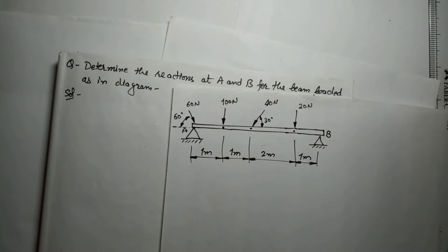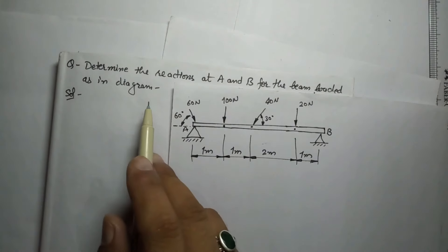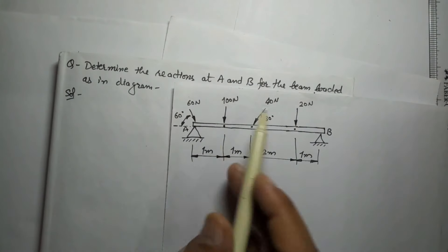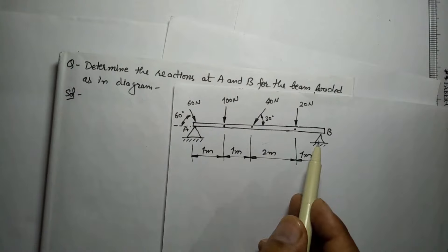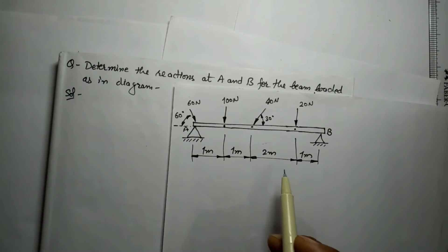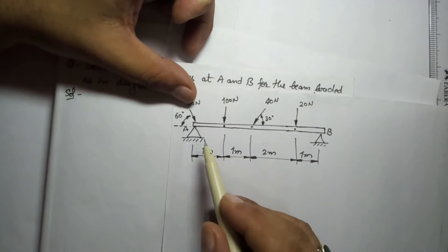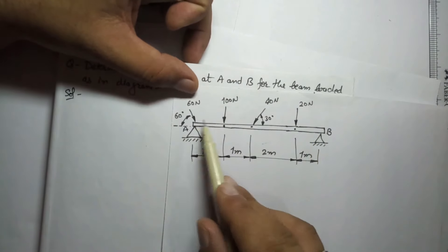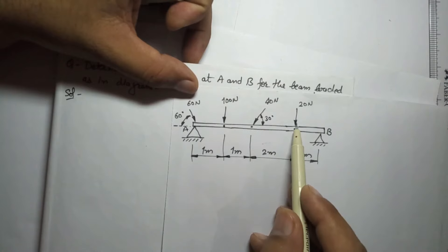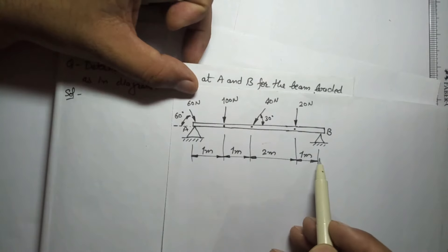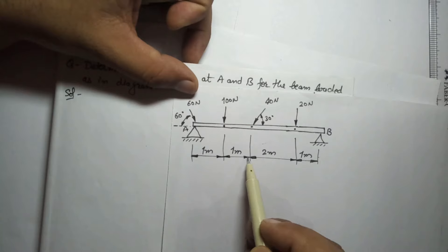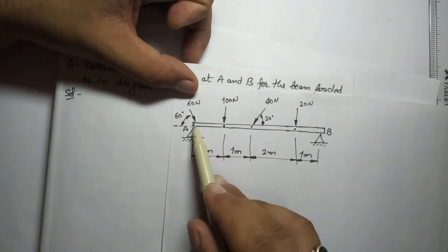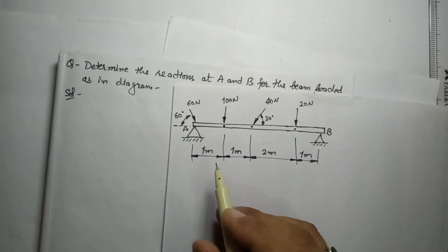We are going to solve this problem based on all the concepts covered so far. Determine the reactions at A and B for the beam load diagram. In the diagram, there are two ends A and B, hinged at A and B. There are four forces: 60, 100, 40, and 20 newtons acting at distances of 1 meter each. The 40 newton force is at an angle of 30 degrees and the 60 newton force is at an angle of 60 degrees.